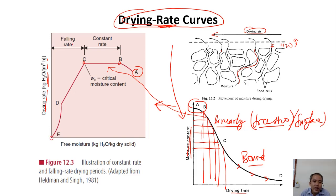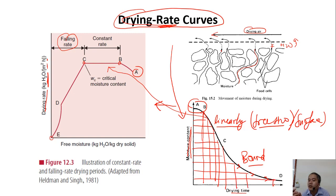From C to D to E it's the falling rate, because now to reduce the same amount of water you need longer and longer time, or you remove less and less water after the same amount of time. The rate is dropping. This axis represents free moisture, and up to here you have equilibrium moisture content.